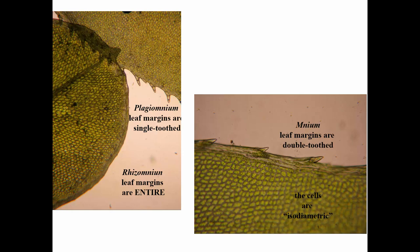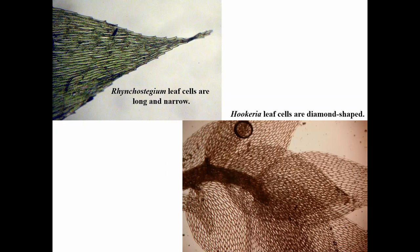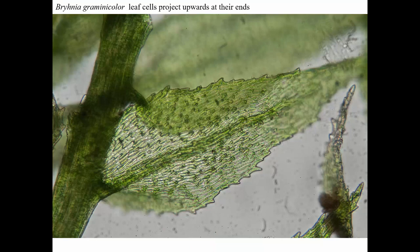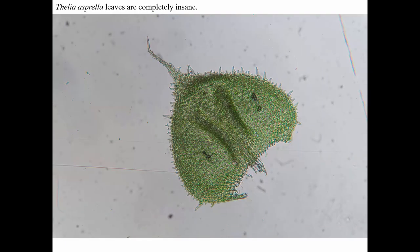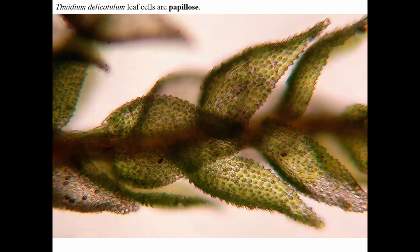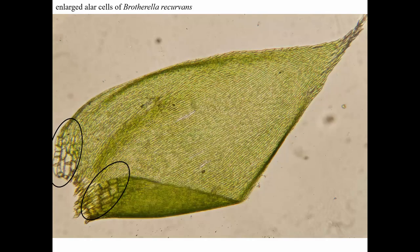Cell shapes can be equal-sided, long and narrow, or diamond-shaped. All these cells are smooth, but here are some whose cells are bumpy — papillose — turned up at their ends. Some leaves have insanely papillose cells with even branched papillae. Here's a moss with stout single papillae — unipapillose. The alar cells at the lower corners of leaves are in some mosses expanded, bubble-like, clear, or blocky and thick-walled; if differentiated, they're a helpful identification feature.